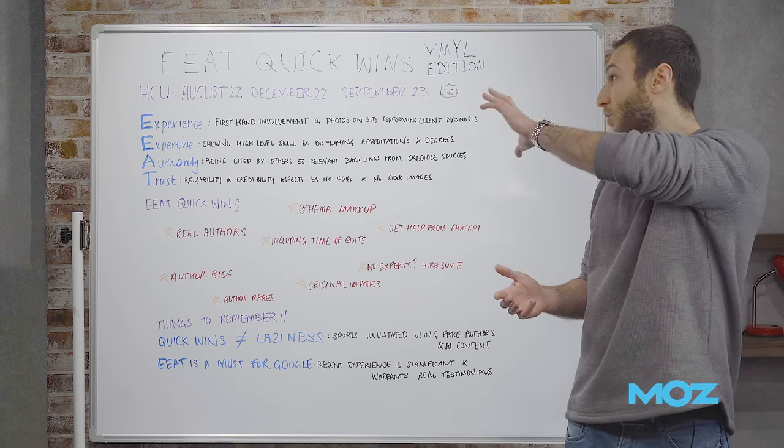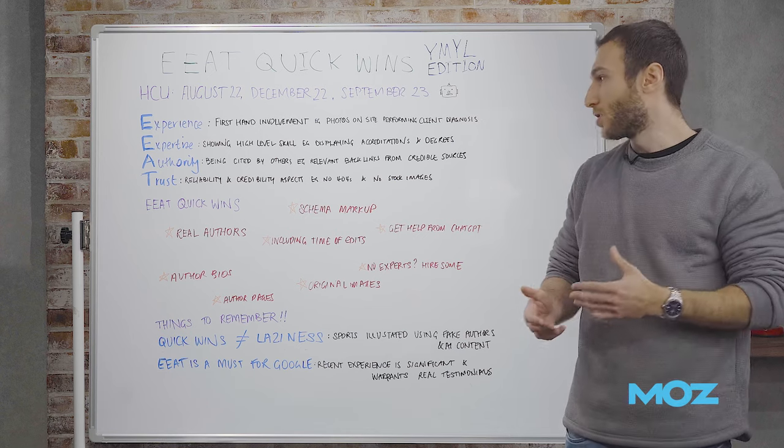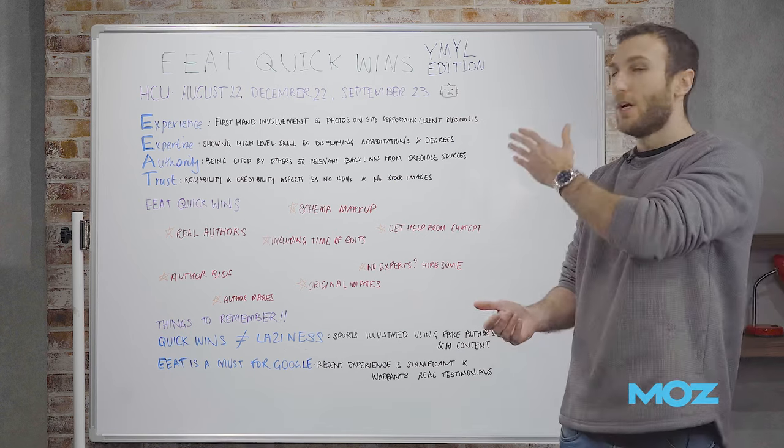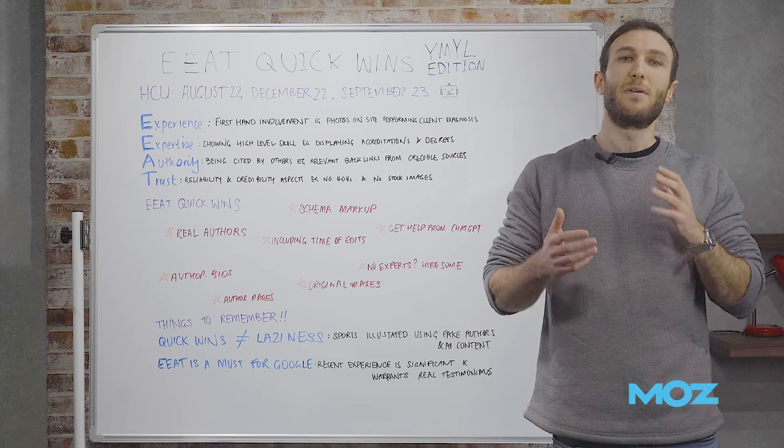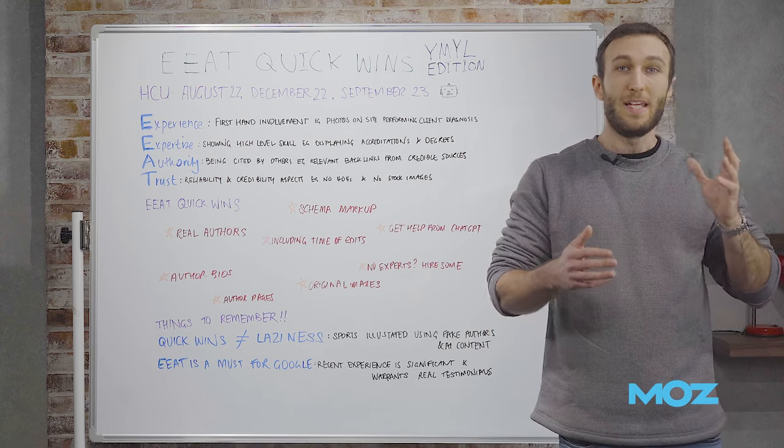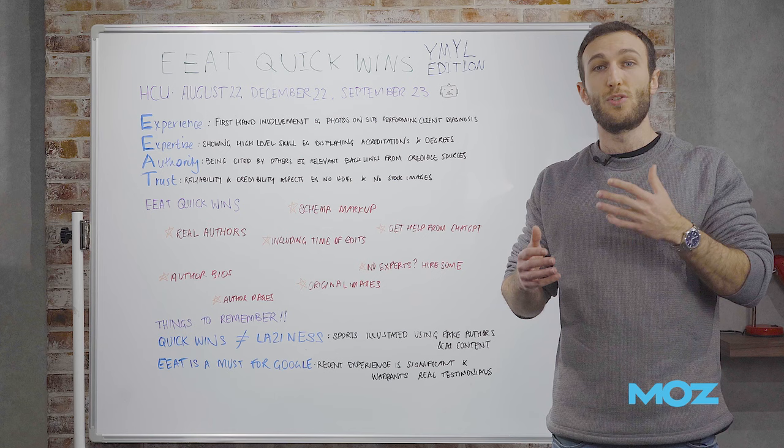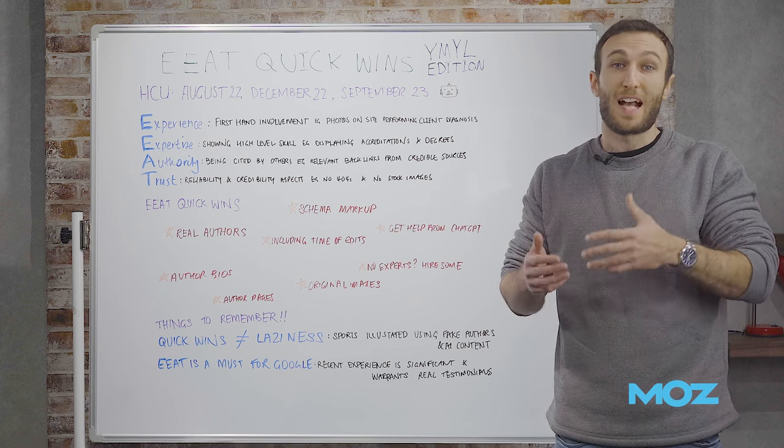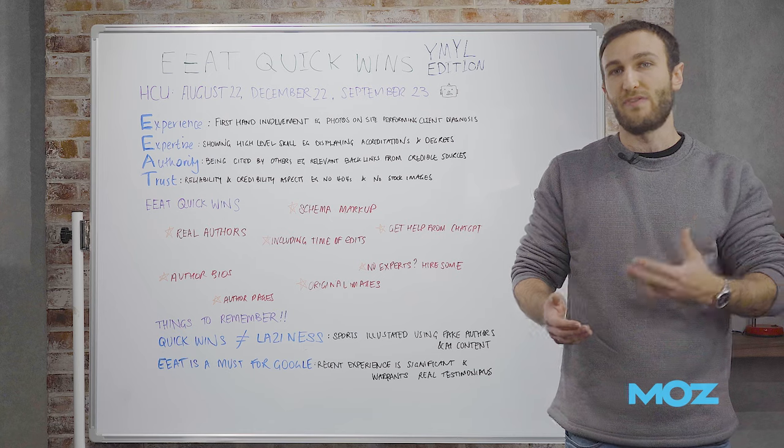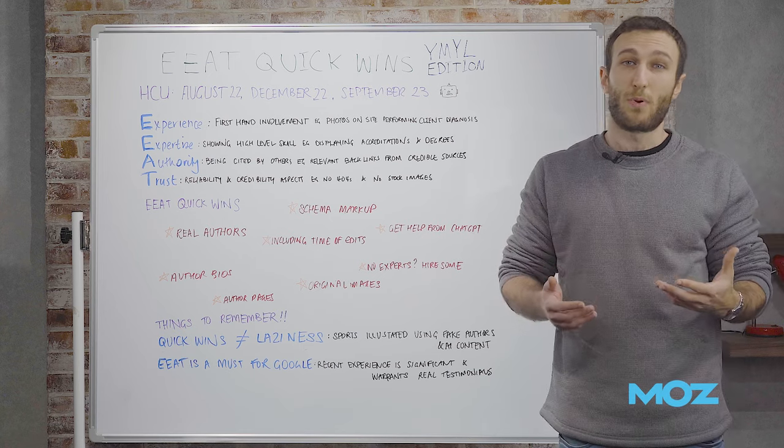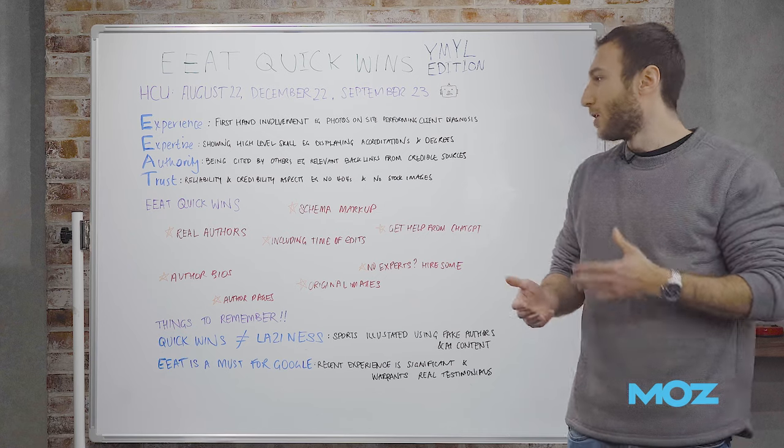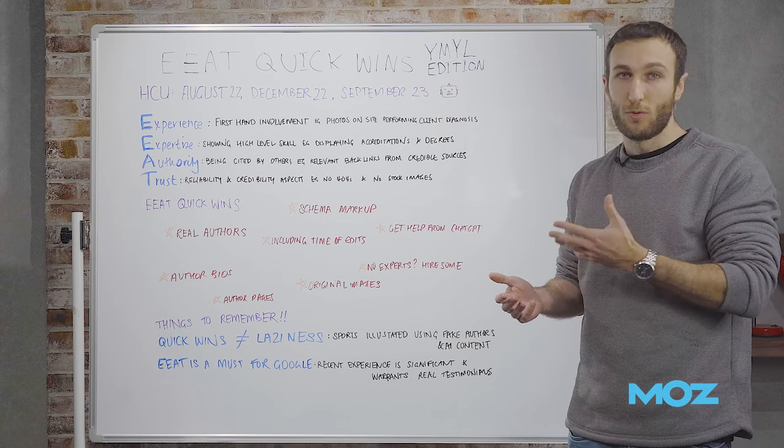That's a breakdown of all the letters within EEAT. Let's get into some quick wins. Quick win number one: use real authors. This is fundamental when it comes to EEAT and helpful content. Users want to be convinced that the person writing the content knows what they're talking about. If you're not using real authors, that's a problem because people can see that and might not trust you. Use real authors whenever you can.